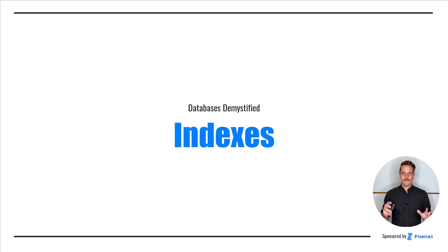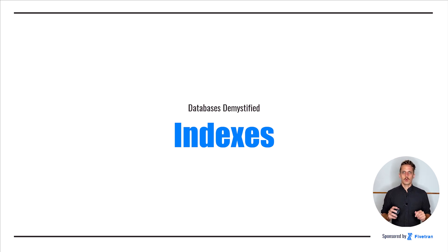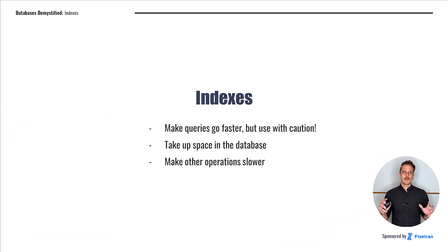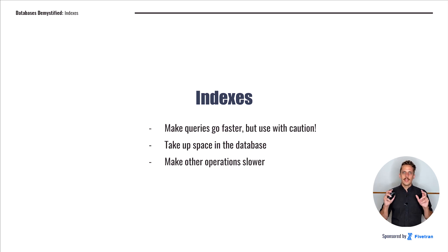Indexes are used to make queries go faster, and they can be found in lots of different contexts in databases. Of course, like everything else we've learned so far in this course, there are trade-offs when using indexes, so it's important to understand how they work. Indexes make queries go faster, so we can use them to speed up our applications or to improve query times for analytics. However, indexes take up extra space in the database, and they can make some of our operations slower.